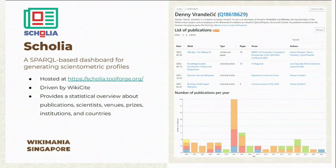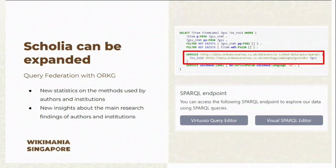Scolia, as the tool, is a SPARQL-based dashboard for generating scientific profiles, and it is mainly driven by the data provided by the Wikicite project. It provides statistical overviews about publications, scientists, venues, prizes, institutions, and countries. But it does not involve statistics about the methods used by scientists and institutions or the main research findings. What we can do is use ORKG to add new SPARQL queries to Scolia to actually cover these kinds of useful information.